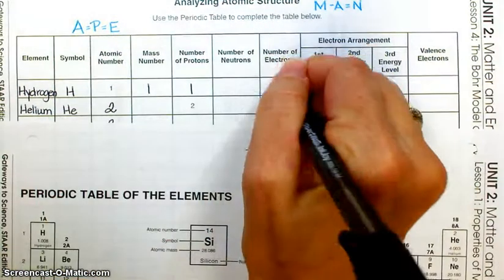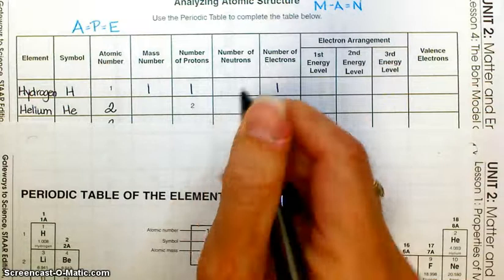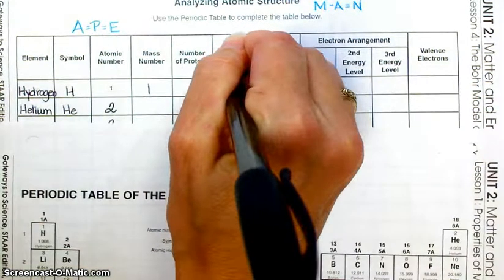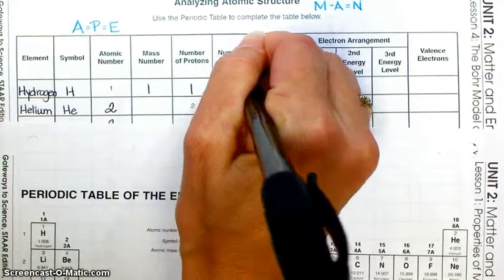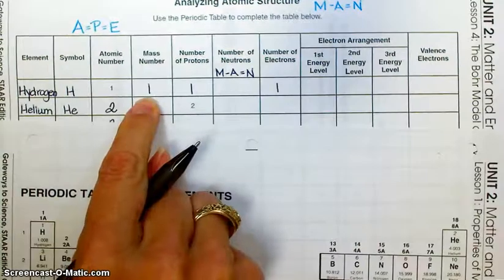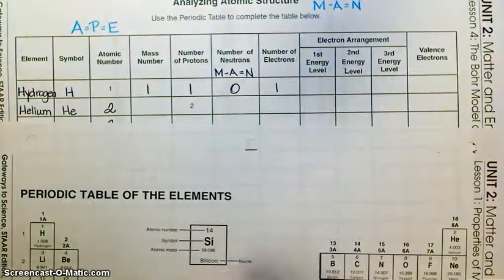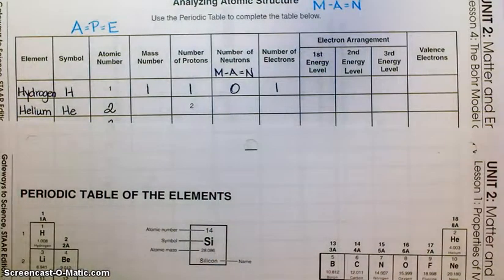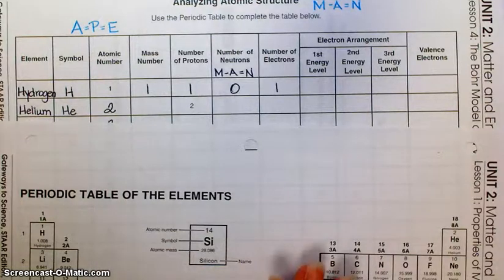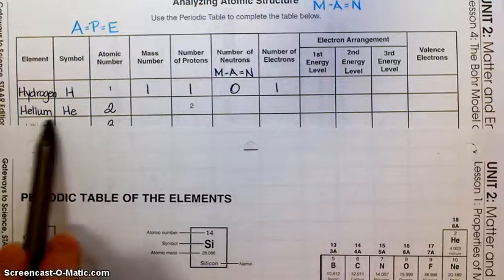To get the number of neutrons, take the mass number minus the atomic number: 1 minus 1 gives us zero neutrons. That's true of most hydrogen atoms — they're super simple, with one proton and one electron. They are the smallest, simplest atom in the universe.